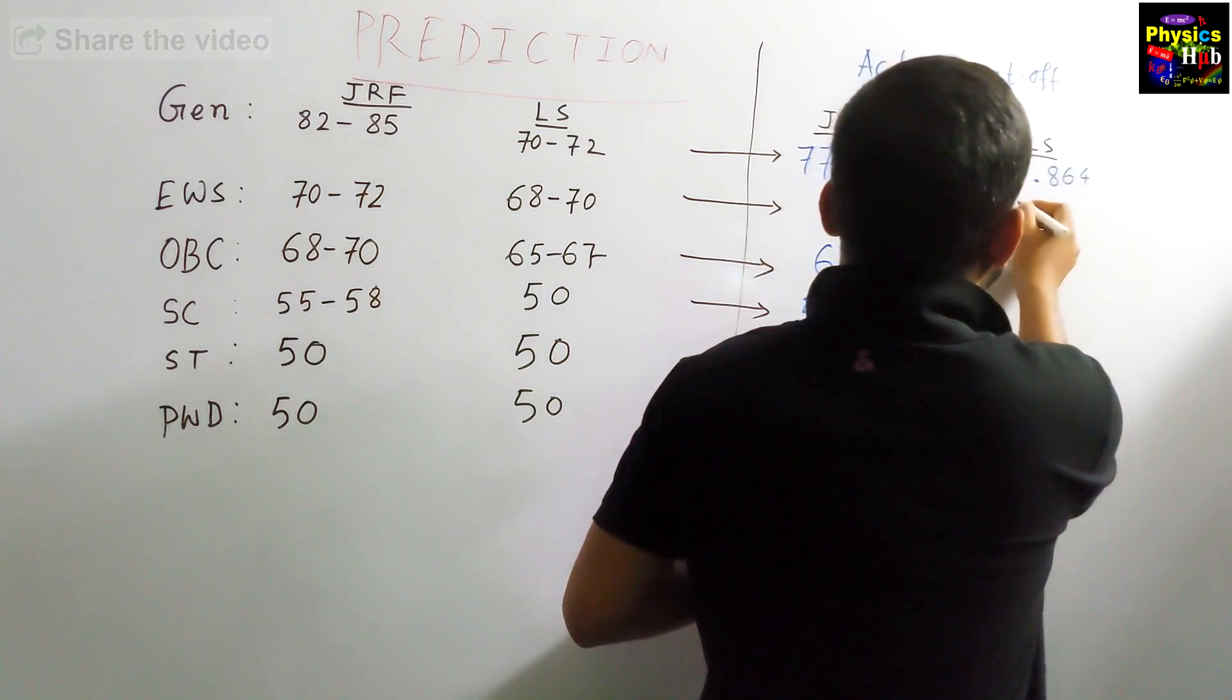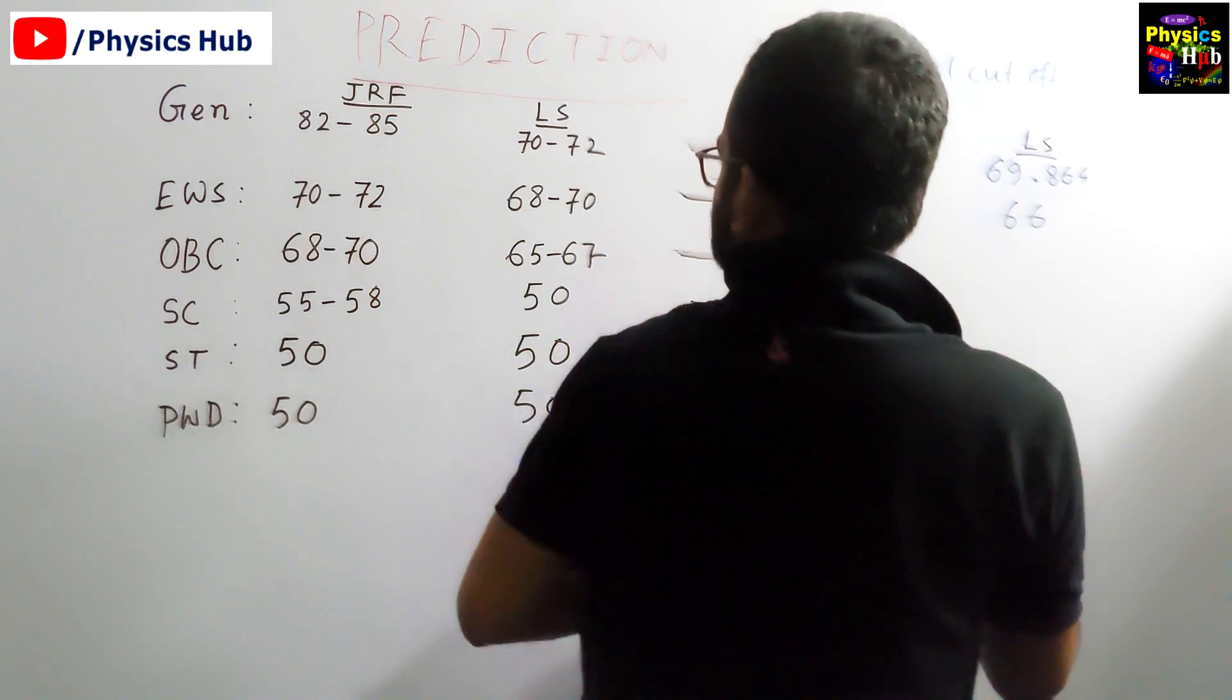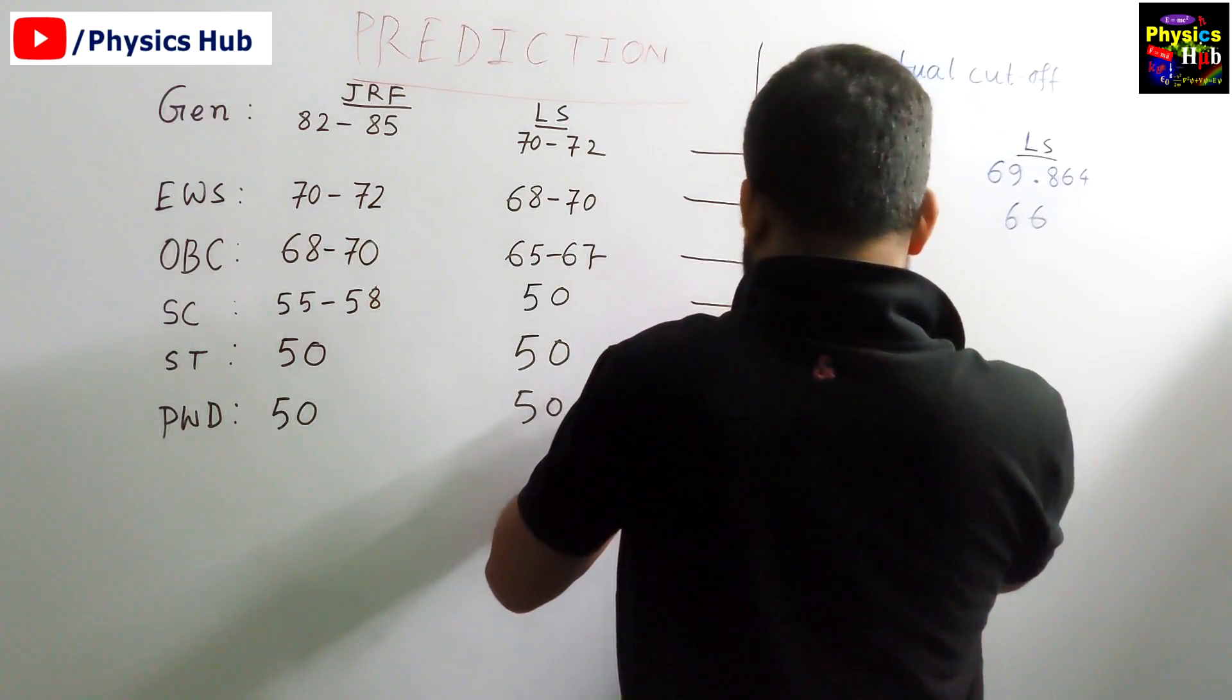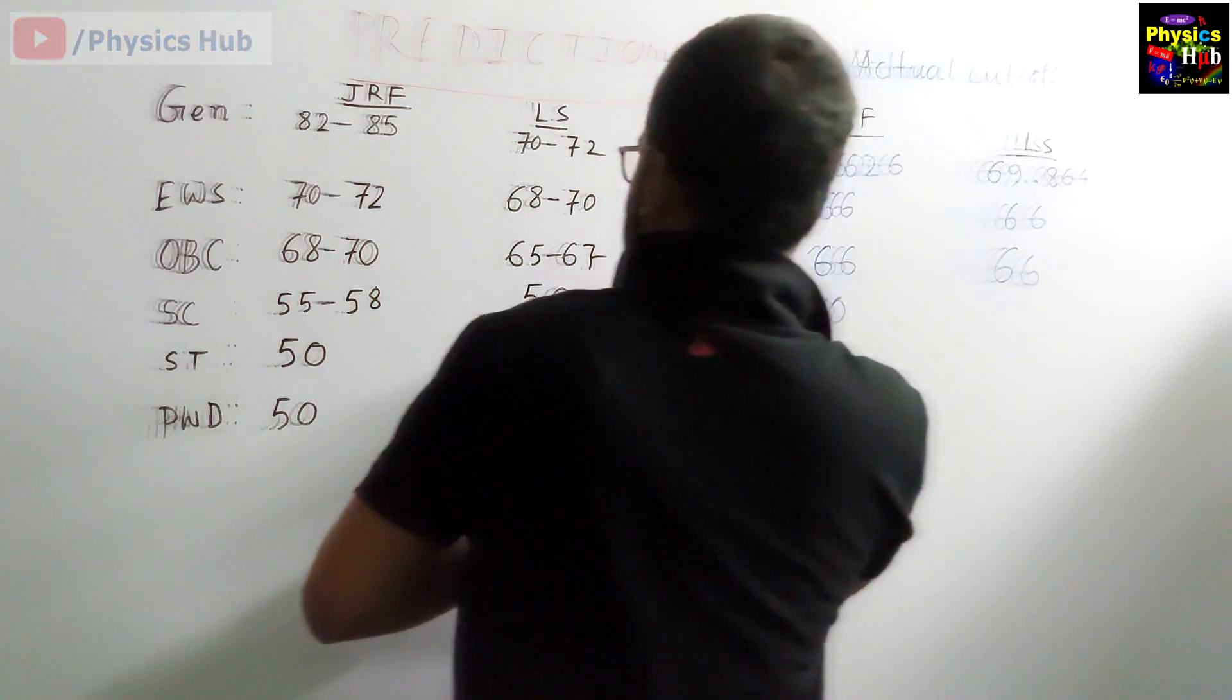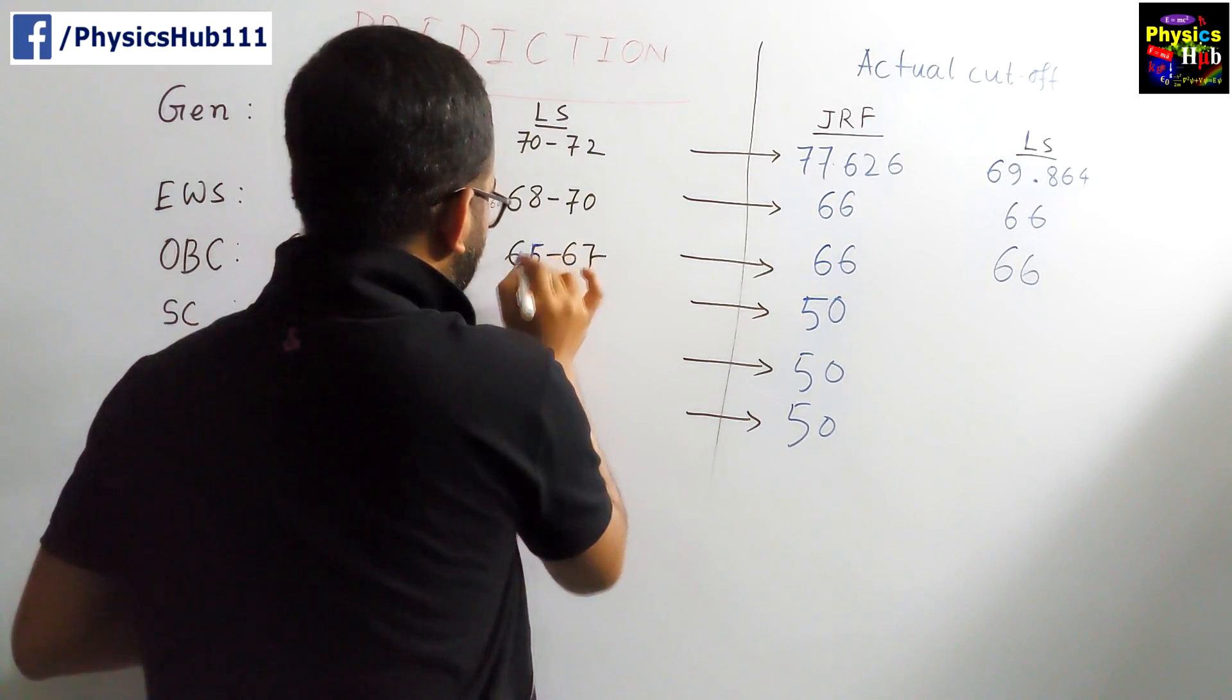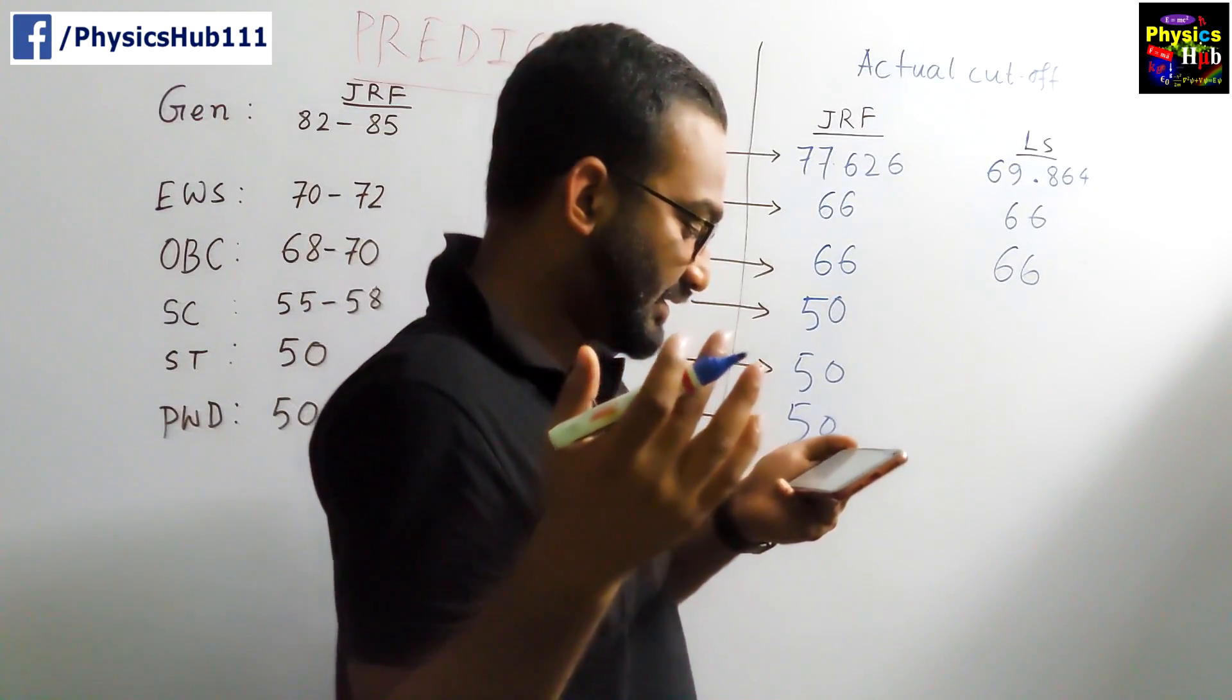OBC 66. Sorry, EWS is 66. What did we predict? 68 to 70. This is very close. Then OBC is 65. This 65 is our miscalculation, it will be 66 because the benchmark is 66. So it must be more than 66.